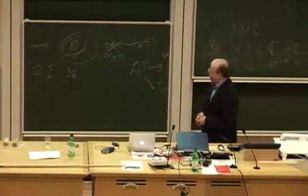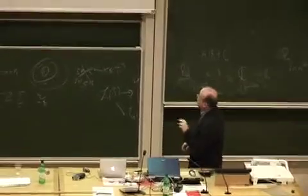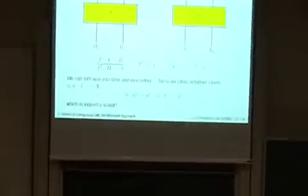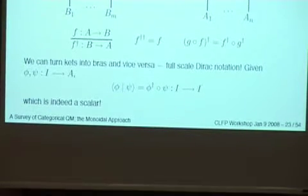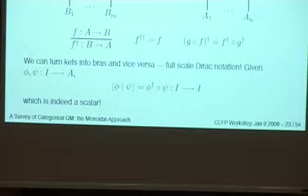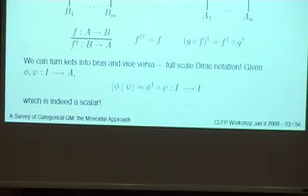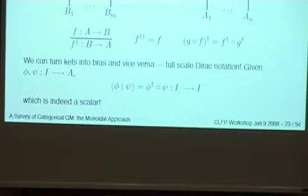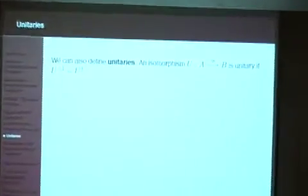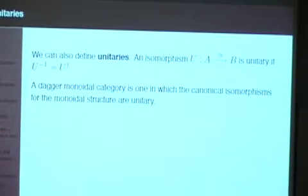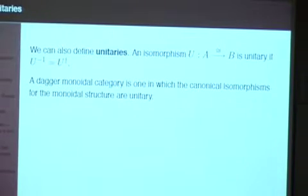With that language, we can not just have things we call states and co-states — we can turn kets into bras and vice versa using the dagger, so we really have the full-scale Dirac notation. Given two states, we can turn one into a ket and compose them — the types check out and what we get is a scalar. That's our inner product. So we get the ability to do all those operations with all the expected properties at this level of structure. The other crucial thing we can do is define unitaries. We know what an isomorphism is in any category — once we have the dagger structure, we can say that an isomorphism is unitary if its inverse is its dagger.